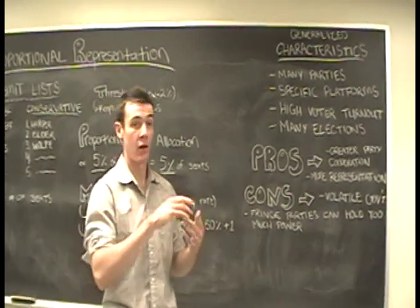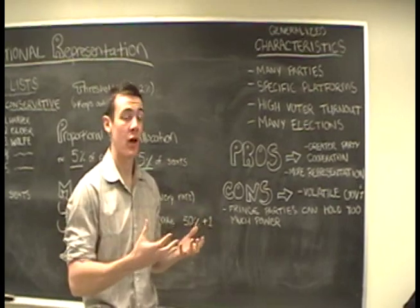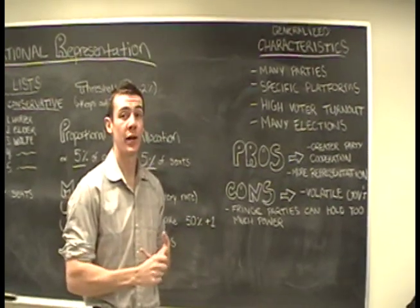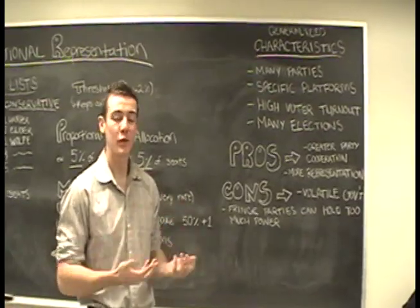So, let's go over some of the generalized characteristics of a proportional representation system. Usually, we're talking about a lot of parties. Those parties have very specific platforms that aren't centralized. There's high voter turnout because people feel like their vote actually means something. And elections are pretty frequent.